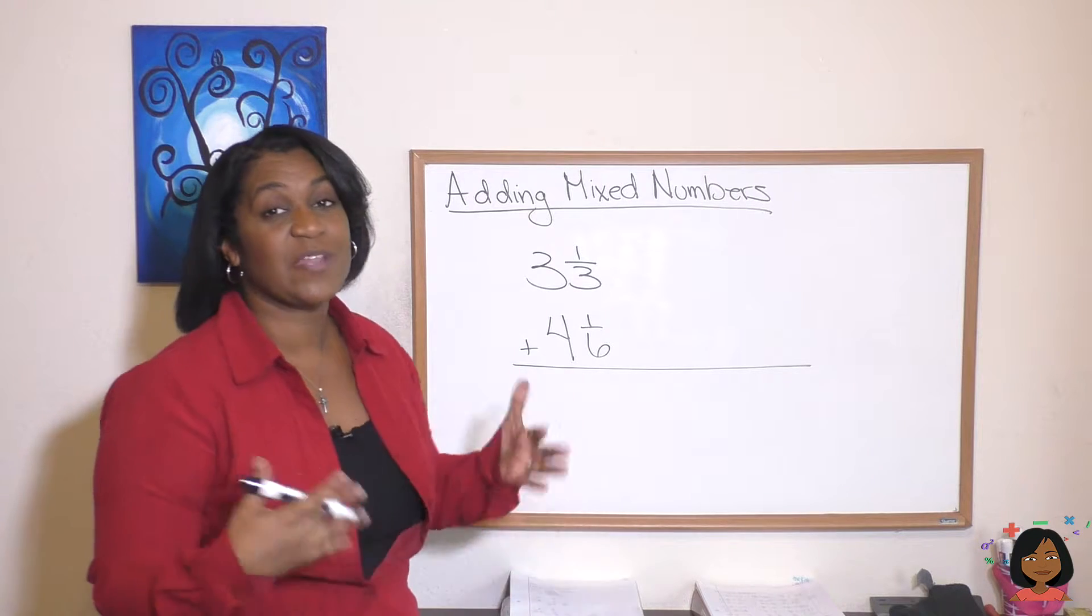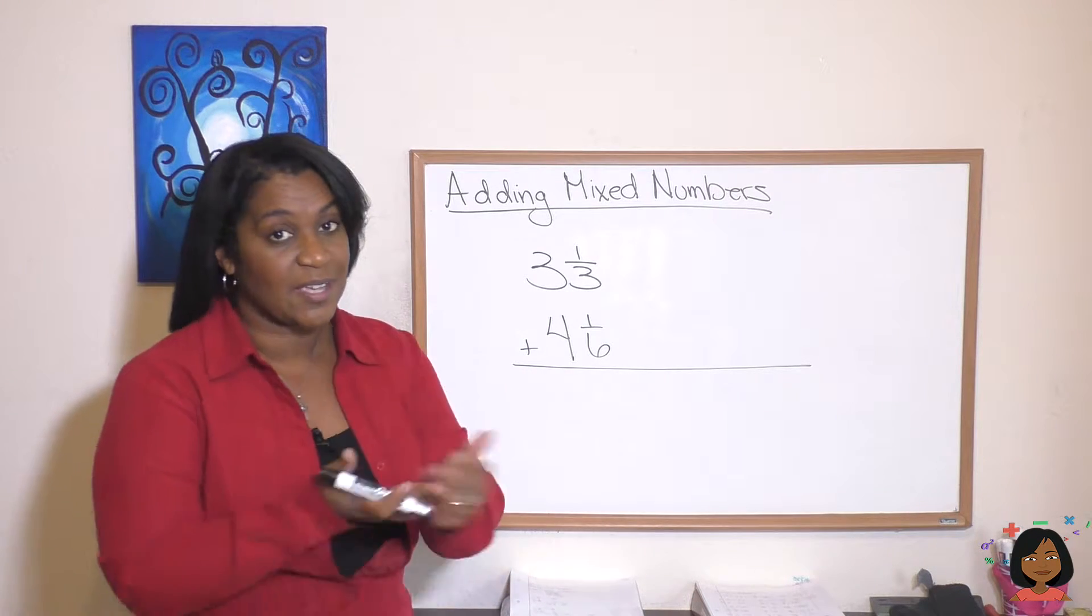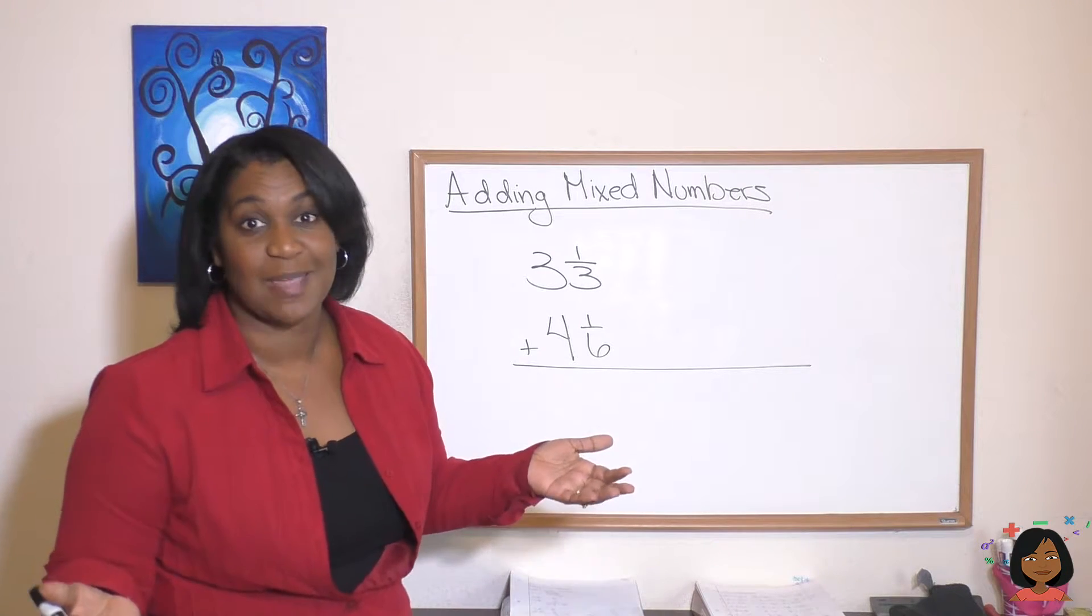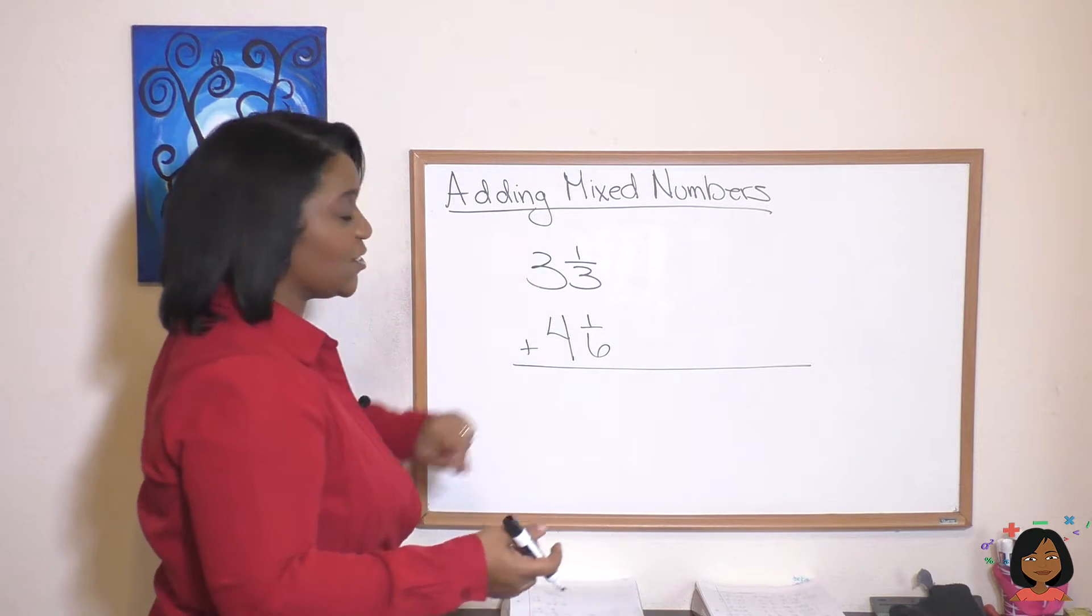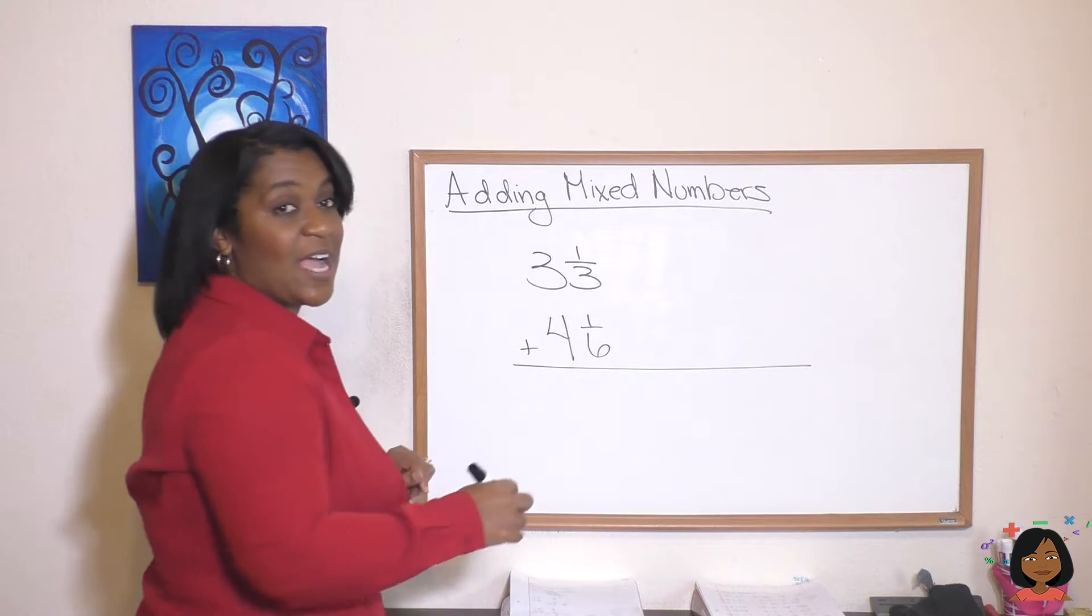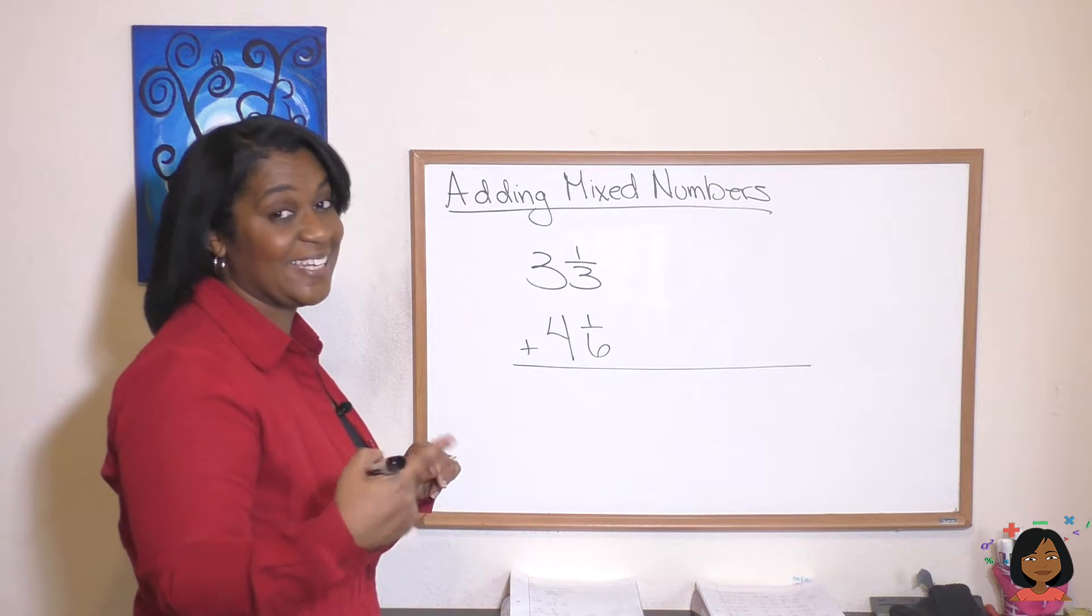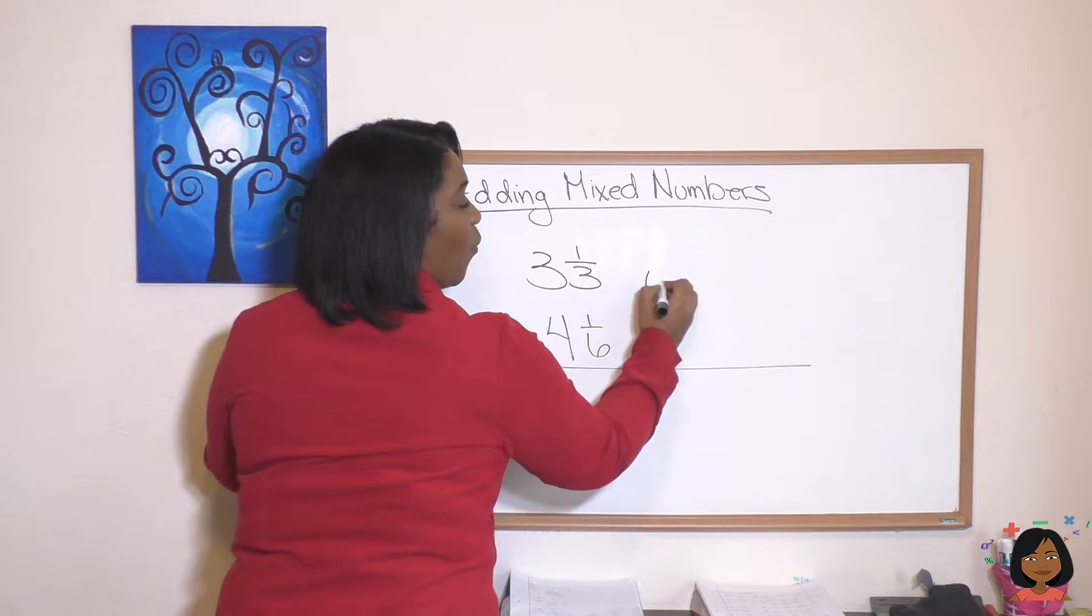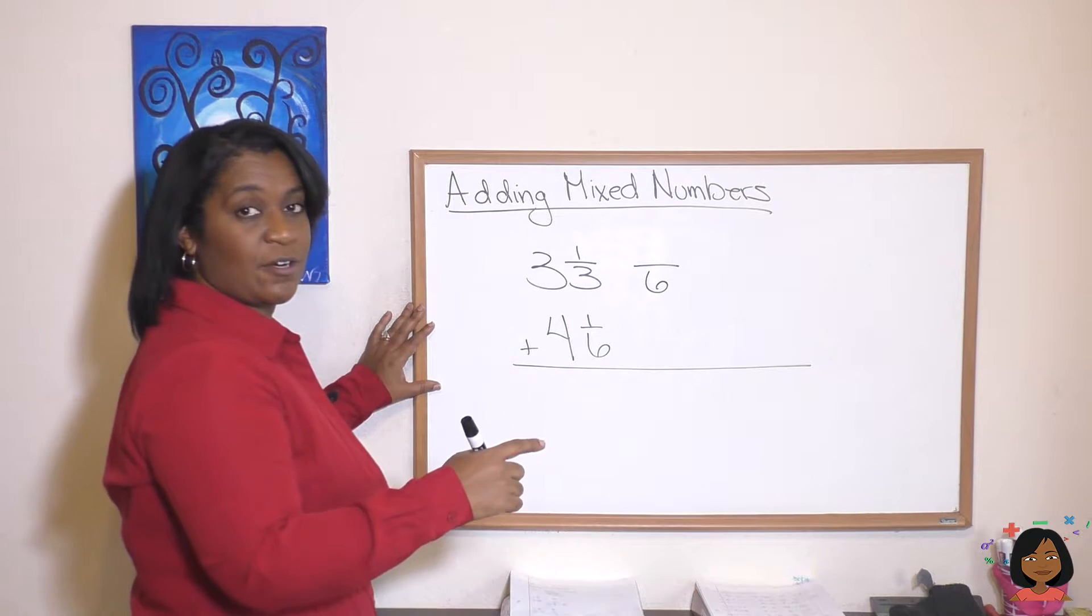Well, we see we don't have the same denominator so we just can't go ahead and add. But our shape technique tells us to make sure they have the same denominator. So let's convert these fractions over. What is our least common multiple? It is the number six, which is one of the ones that we have. So let's convert 1/3 over to 6,